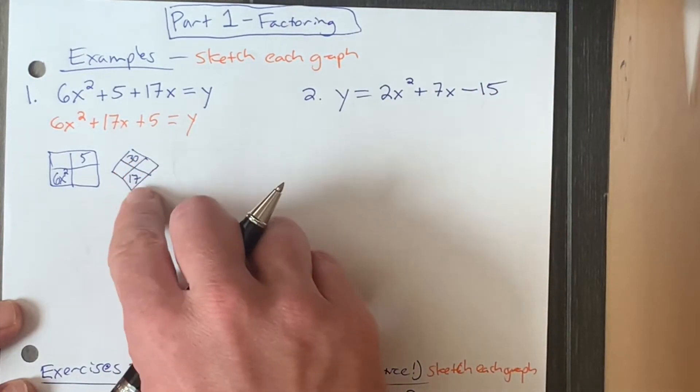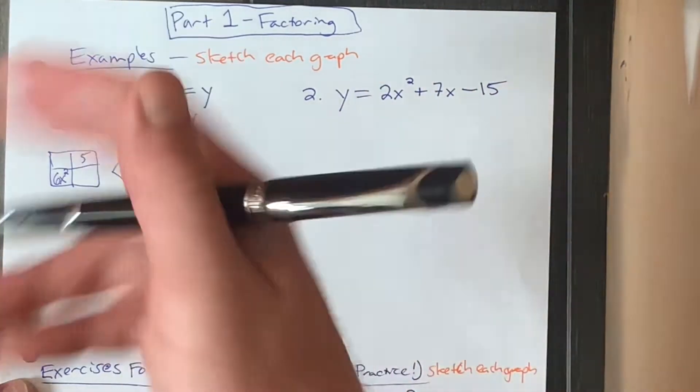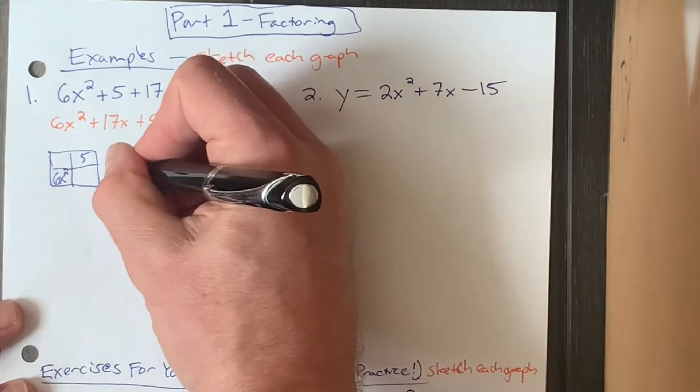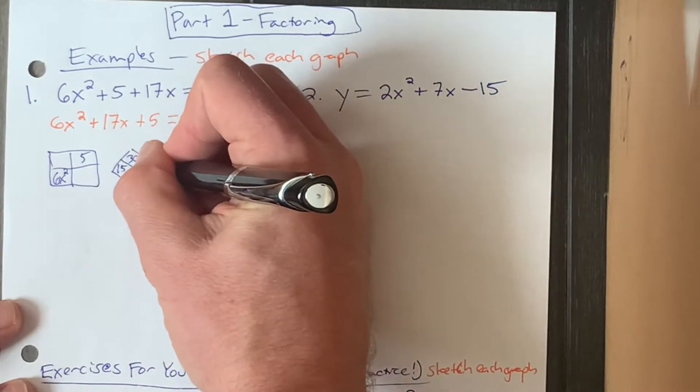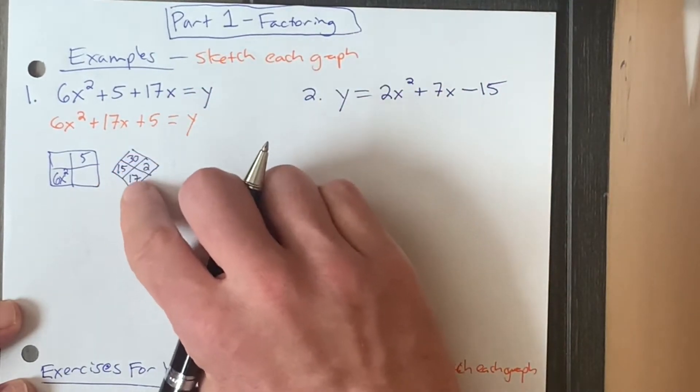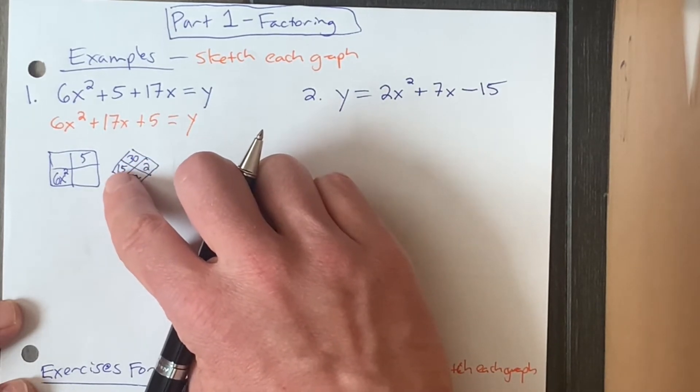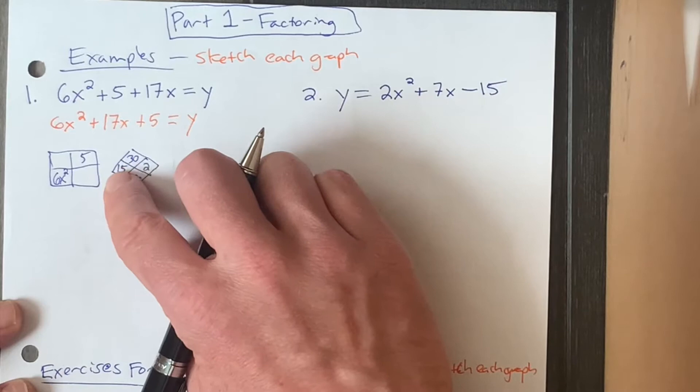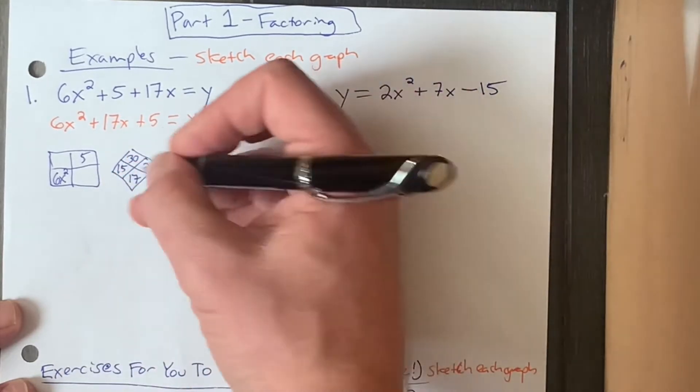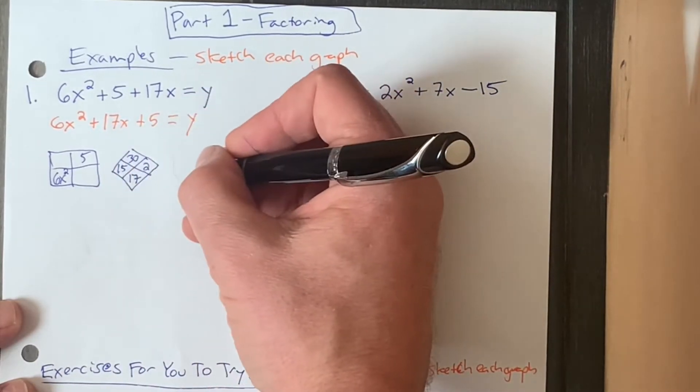Two numbers that multiply to 30 and add to 17. Well, I'm guessing that it's gonna have to be 15 and 2. So I was kind of thinking, 17's about halfway up to 30, 15 is exactly halfway to 30, so let's try 15 first. 15 plus 2, yep, checks out. 15 times 2 is 30, 15 plus 2 is 17.